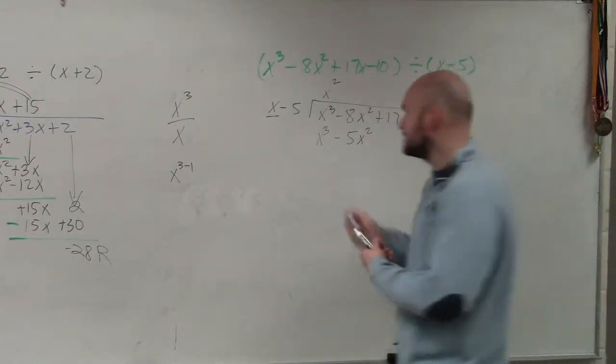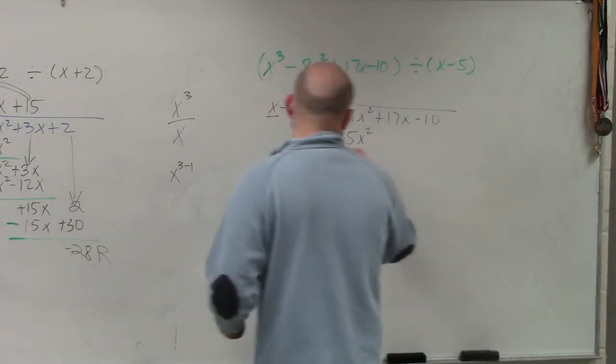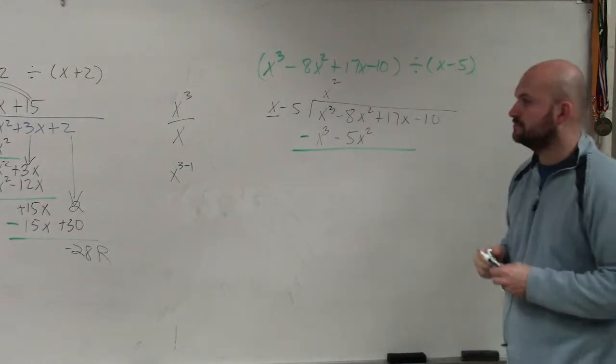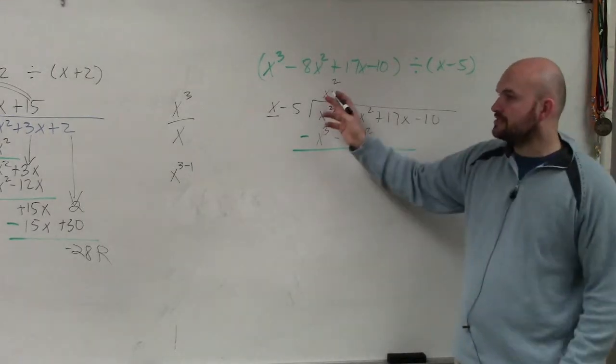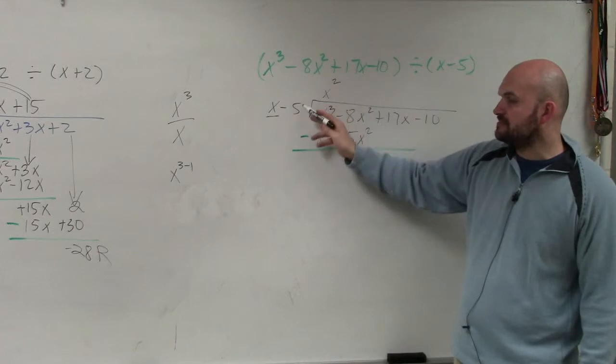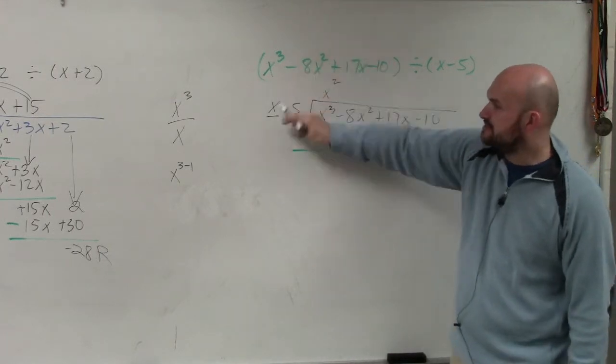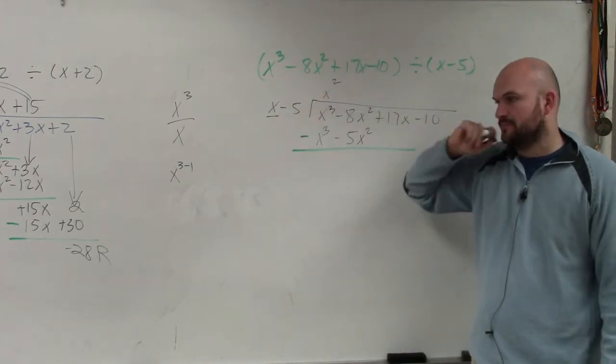Now, we subtract the rows. Wait, when did you just multiply to get negative 5? Once you get x squared, you multiply x squared times x and x squared times negative 5. You have to multiply this times both terms.